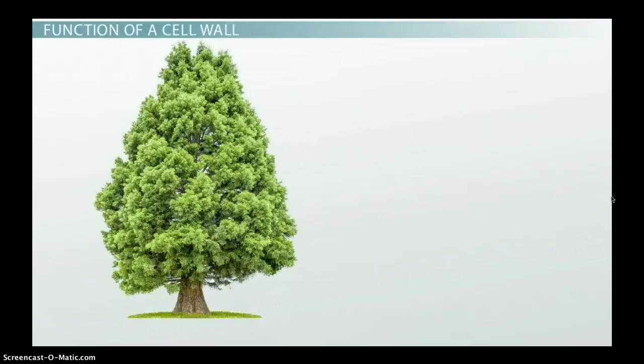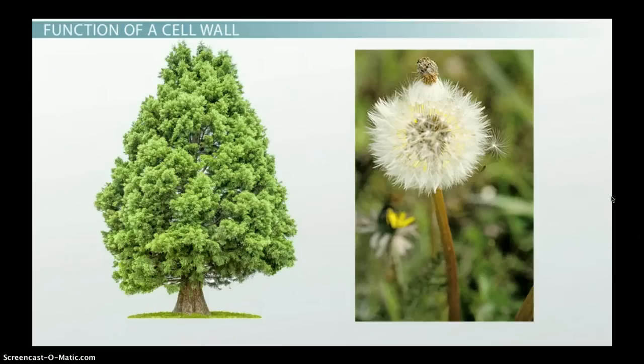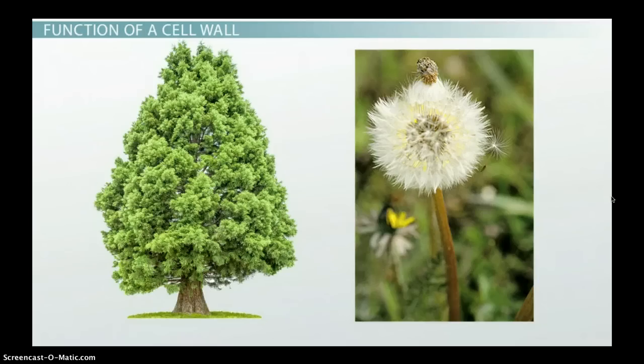A redwood tree and a dandelion both have cell walls on the outside of all of their cells. The cell walls are there to give the plants their shape and support. However, the cell walls act and are constructed a little different to meet the needs of the particular plant.